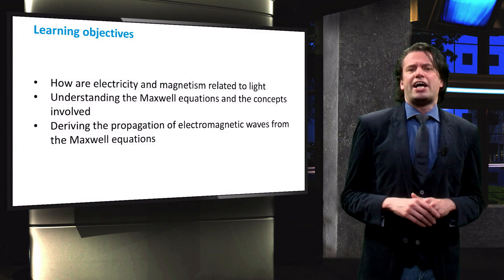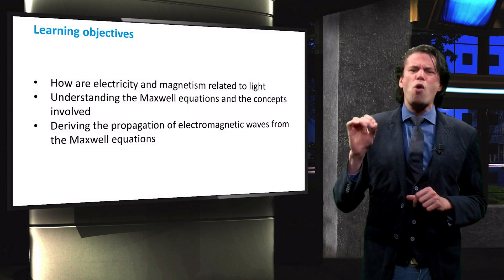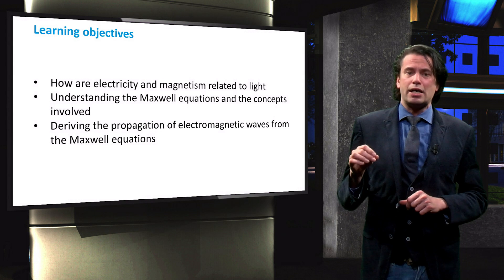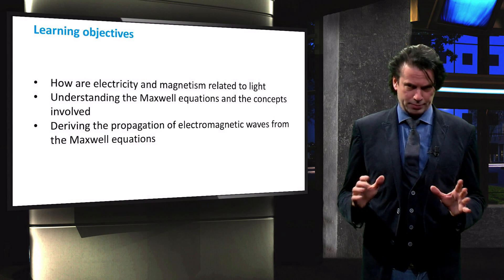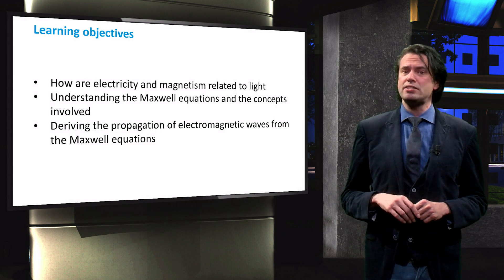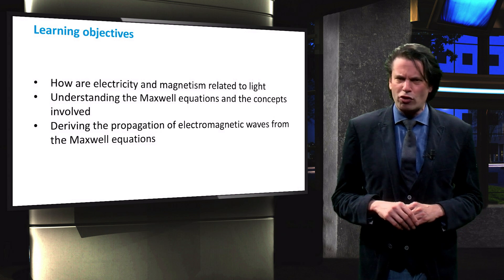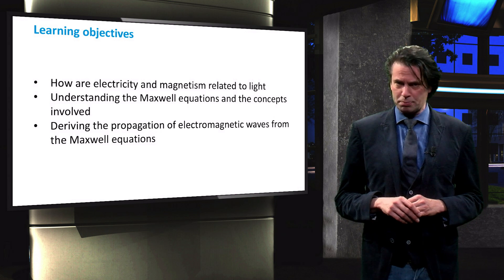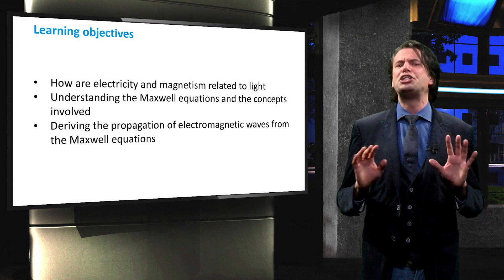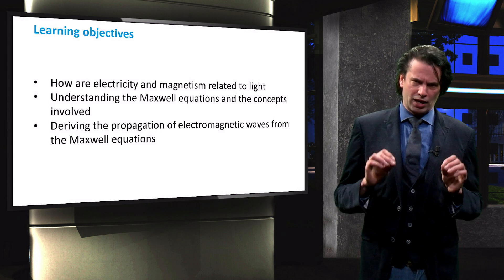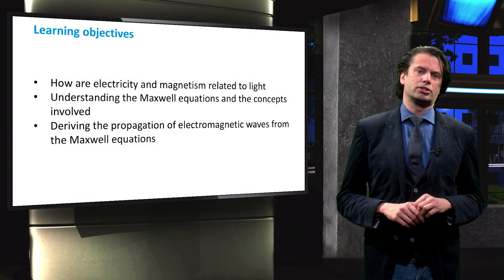The learning objectives of this video are to understand how electricity and magnetism are related to light. To that end, we will create an understanding of the Maxwell equations and of some of the concepts involved. Finally, we will see how the propagation of light is derived from the Maxwell equations.